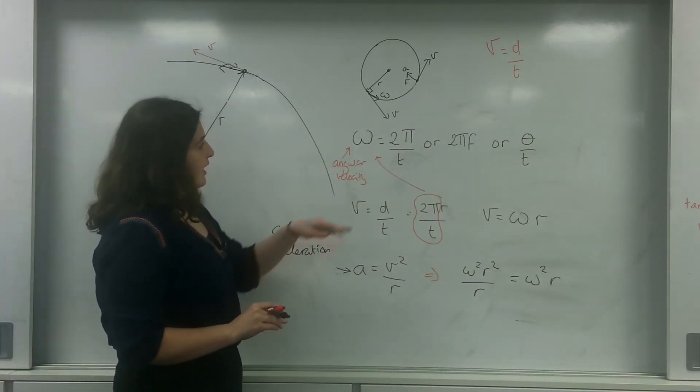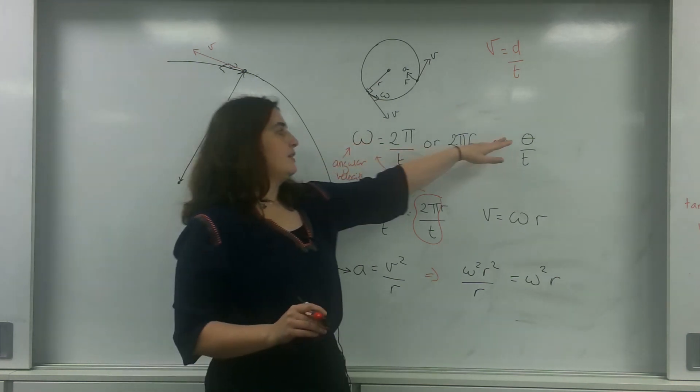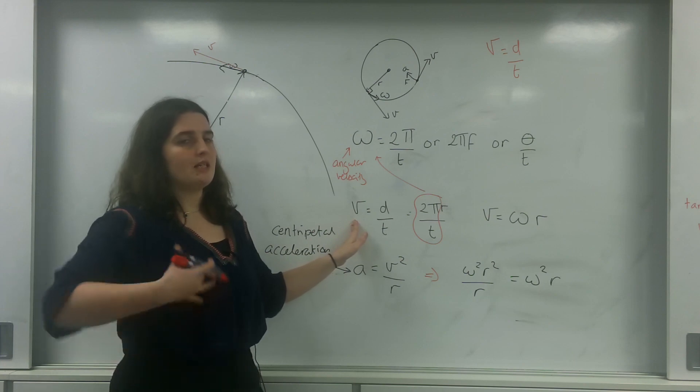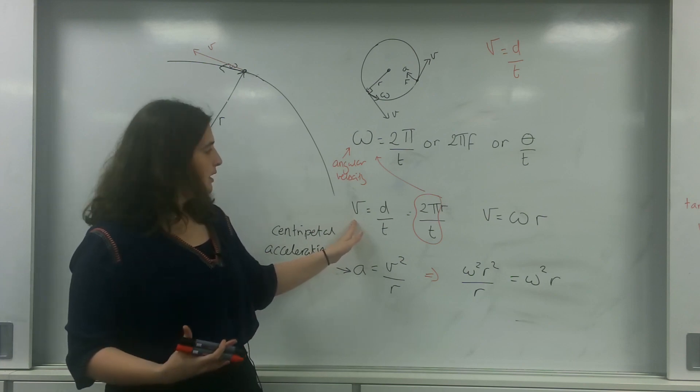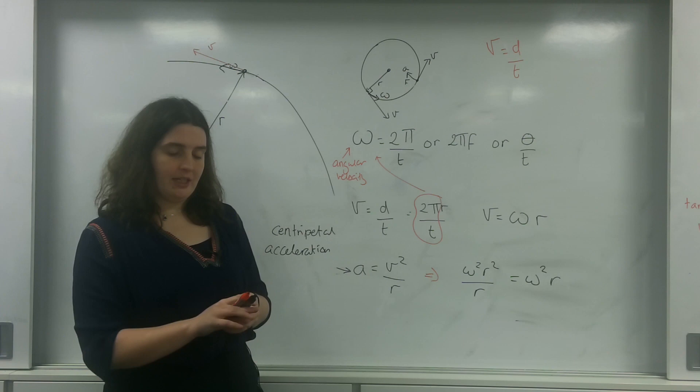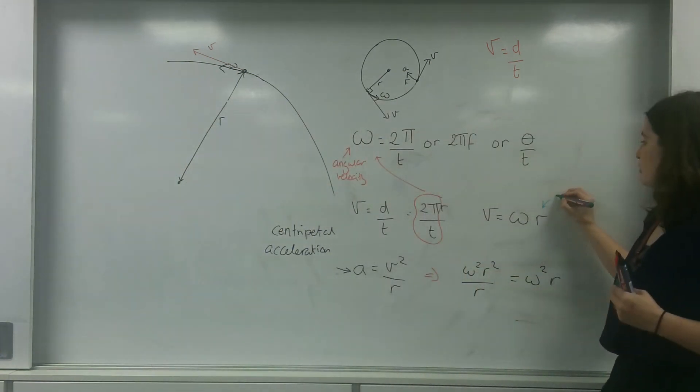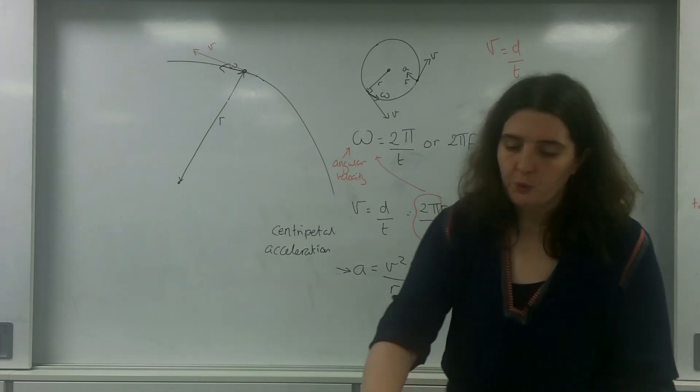So, these formulae here, this omega is θ over time, or 2π over t. This tangential velocity, this tangential speed, the speed at any point. Here, and acceleration. Now, it's really important just to make a note that this is constant magnitude. So it's constant around a circle.